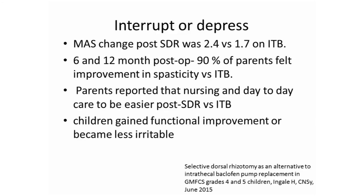A UK study addressed the question of whether to interrupt or depress the spasticity network. Thirteen patients scheduled for pump replacement instead received a selected dorsal rhizotomy. The Ashworth score was much more diminished with SDR compared to intrathecal baclofen. At 6 and 12 months, 90% of parents felt improvement in spasticity versus ITB, nursing and day-to-day care was easier post-SDR, and children gained more functional improvement and became less irritable — a big change for caregivers.